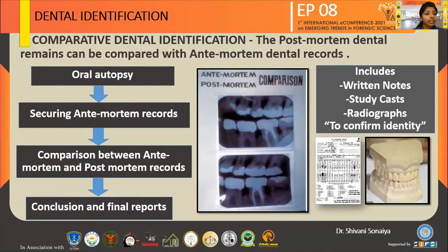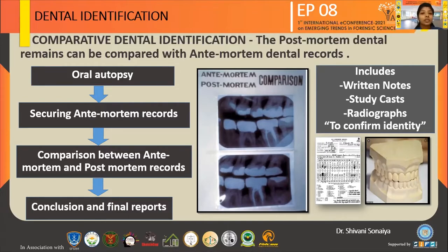Dental identification of human beings plays an important role in criminal, monetary, social, burial, and many other cases. The main form of dental identification is comparative dental identification. This involves comparing post-mortem dental remains with ante-mortem dental records. The forensic odontologist performs charting and written descriptions of dental radiographs and charting of the oral cavity. Ante-mortem dental records include the numerous dental treatments undergone along with their preservation.